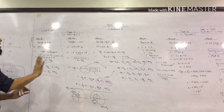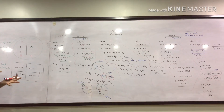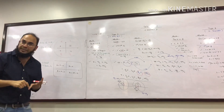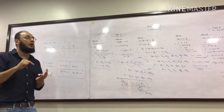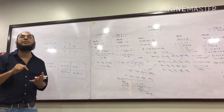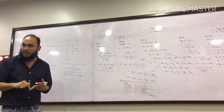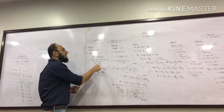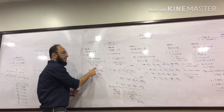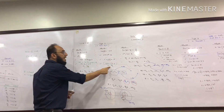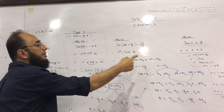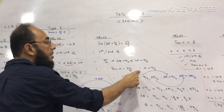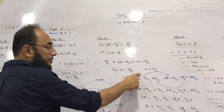The first three examples were Type 1 questions where all angles were expressed in terms of pi. The basic angle in Example 1 was pi by 6, and in Examples 2 and 3 it was pi by 3.